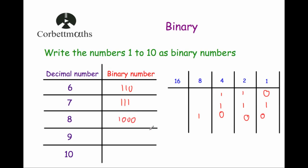As you can see, the numbers are getting quite long — to write the number 8 in binary we're using 4 digits: 1000. The simple thing is though, we're only ever using two different digits, which keeps it simple. The number 9 is an 8 and a 1, so that's 1001. The number 10 is an 8 and a 2, no 4 and no 1, so it's 1010.